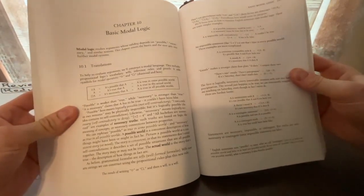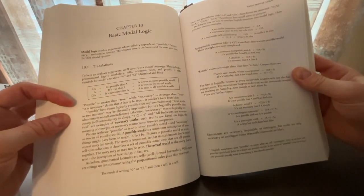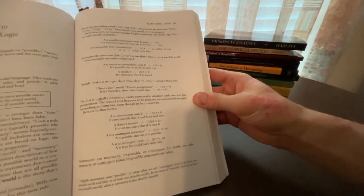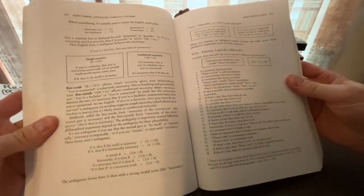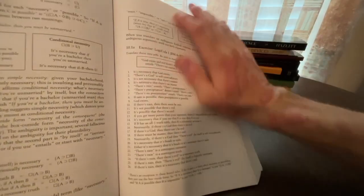So chapter 10, basic modal logic. Section 10.1 is on translations, where we talk about the diamond symbol and the box symbol, which is essential in modal logic. And it's a readable book, so I definitely think you can self-study from it. We'll talk a little bit about simple necessity, conditional necessity in a minute. Here we have translation exercises. So that's pretty important.